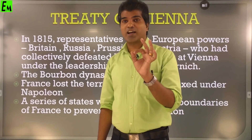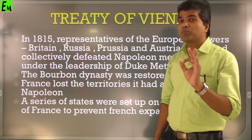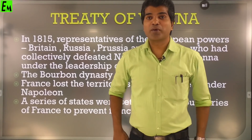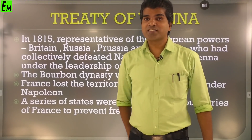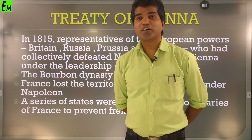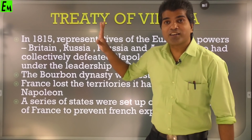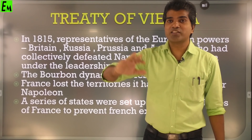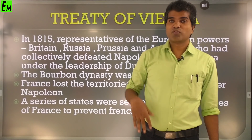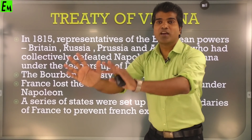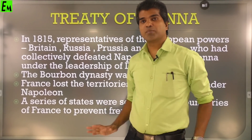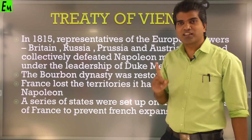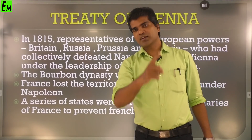The first decision they decided upon: the Bourbon dynasty was restored. They decided to bring back the Bourbon dynasty. You remember from 9th standard - Louis XVI was belonging to the Bourbon dynasty. Now in the Treaty of Vienna, after Napoleon Bonaparte is defeated, these four country delegates decided they want to bring back the Bourbon dynasty - they will install a king from the Bourbon dynasty. That was the first decision accepted in the Treaty of Vienna.